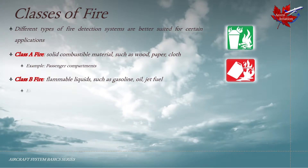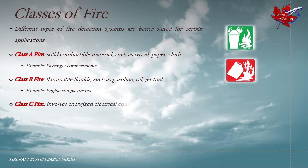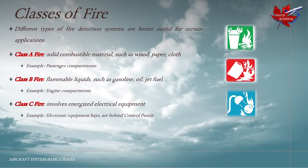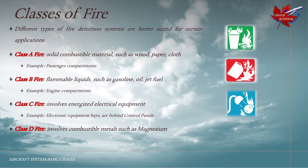Class B fires could occur within engine compartments. Class C fire involves energized electrical equipment and has the added hazard from electricity. Typically this kind of fire could occur in electrical equipment bays or the area behind control panels in the aircraft. Class D fire involves burning metals such as magnesium. These kinds of fires are difficult to extinguish — if the wrong kind of fire extinguishing agent is used, it could not only prove ineffective but could also cause the fire to spread.